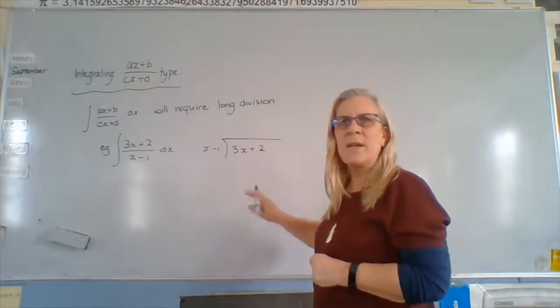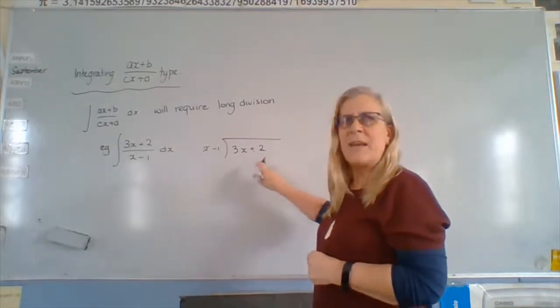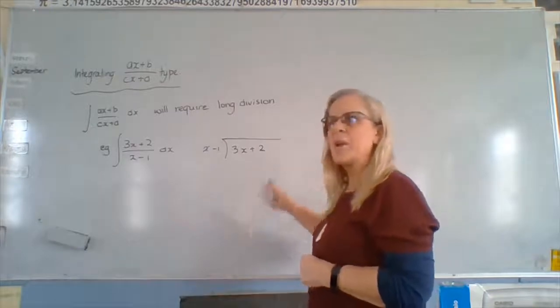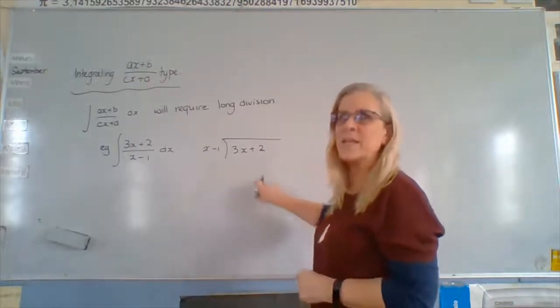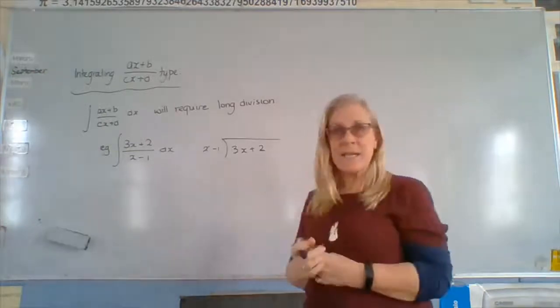But you used to do it like 3 into 46 or whatever. And you went 3 into 4 went 1, and then that was 16 left over, and 3 into 16 went 5, and then there was 1 left over. And you put R1 or you grew up and you put point and you went into finding decimals. This is exactly that same process.